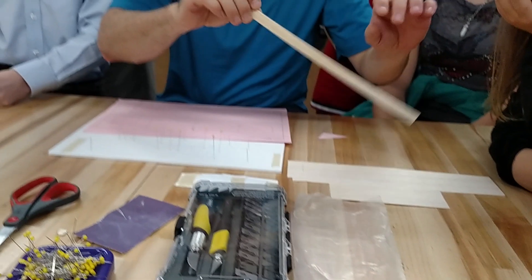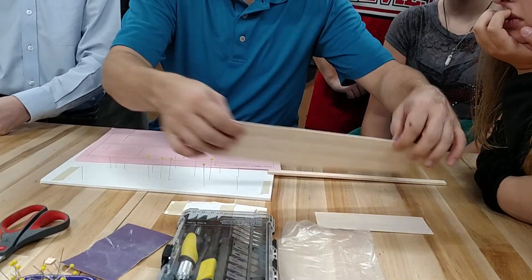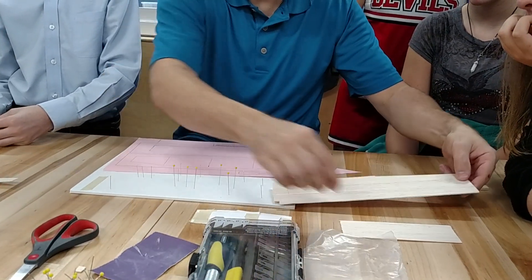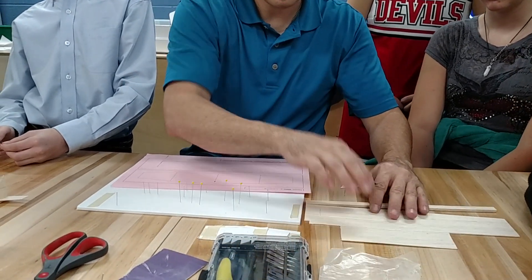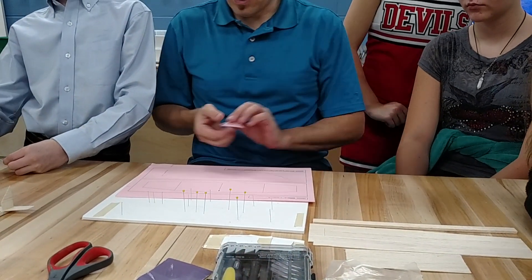and you also need the parts of the plane: the fuselage, this piece of balsa wood for the wing, and then this for the horizontal and vertical stabilizers. We'll get into that right now.